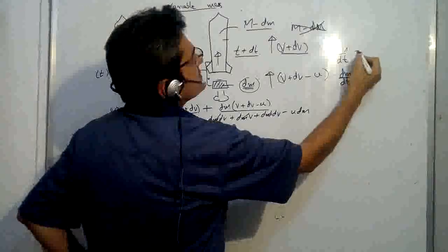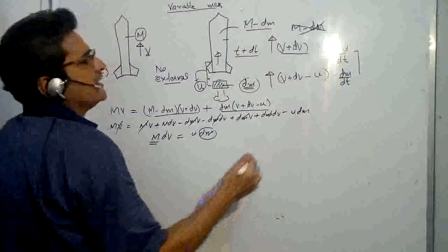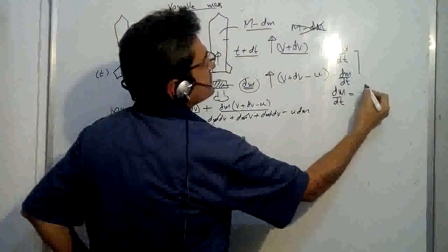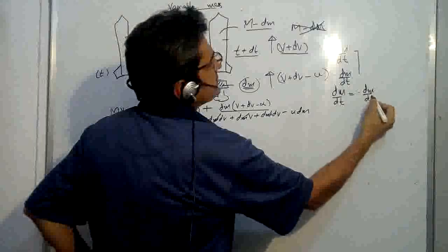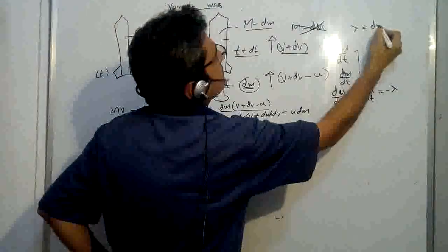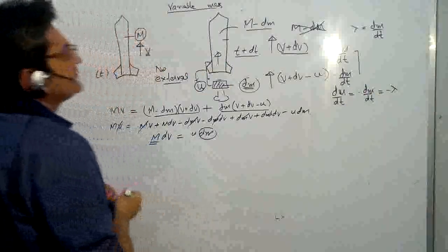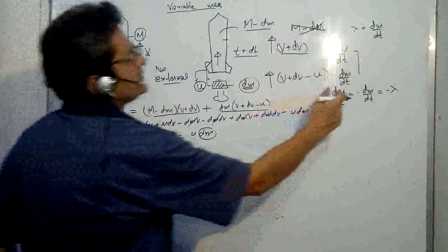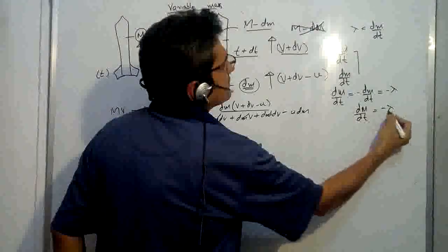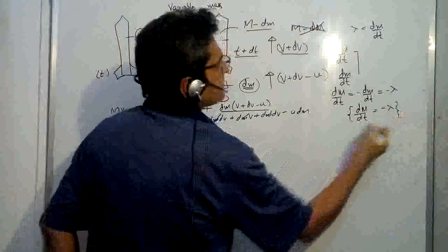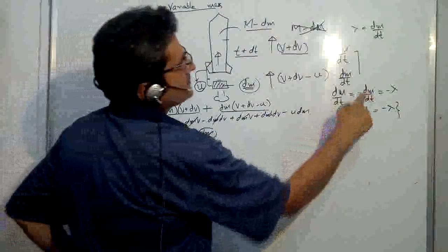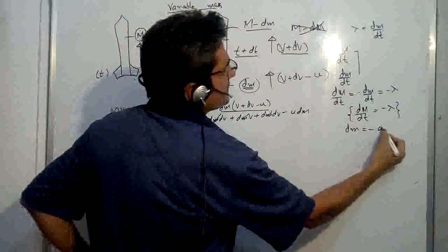We know the mass of rocket is decreasing and this is the mass of exhaust which is increasing. They are equal, so dm upon dt will be equal to minus dm upon dt, or minus lambda if lambda is dm upon dt. Because this is decreasing, that is why it is minus.